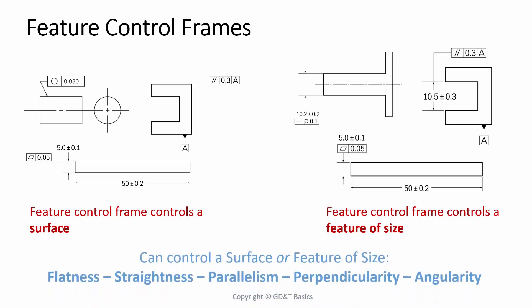Now, these five symbols can control a surface or feature of size, so you need to pay extra attention when you see these called out on a drawing: flatness, straightness, parallelism, perpendicularity, and angularity all have different controls based on whether it's being called on a surface or a feature of size.